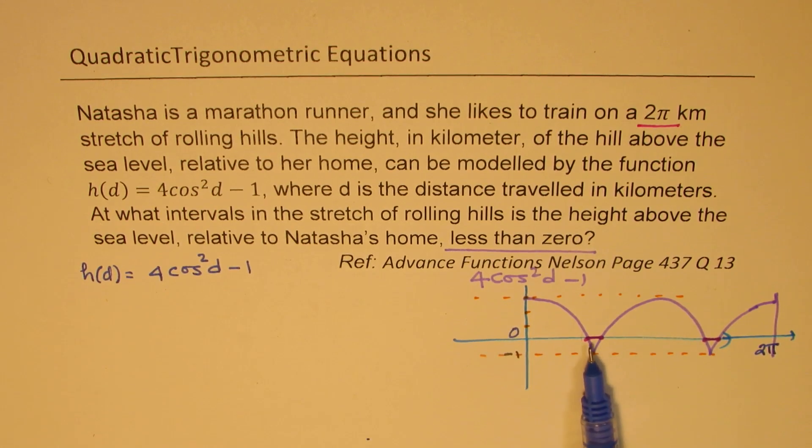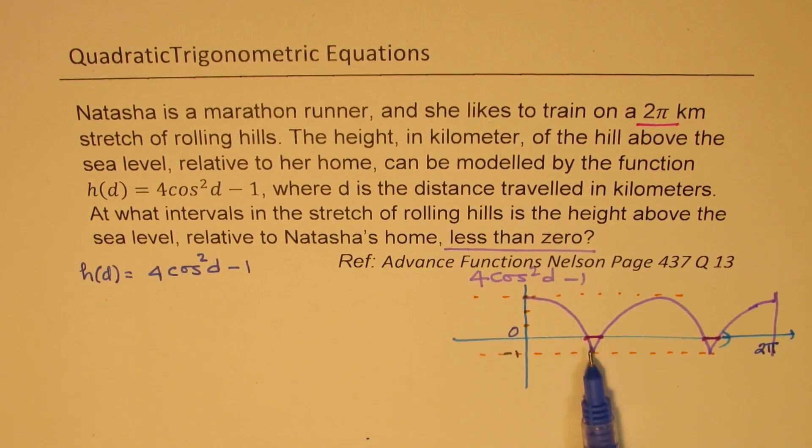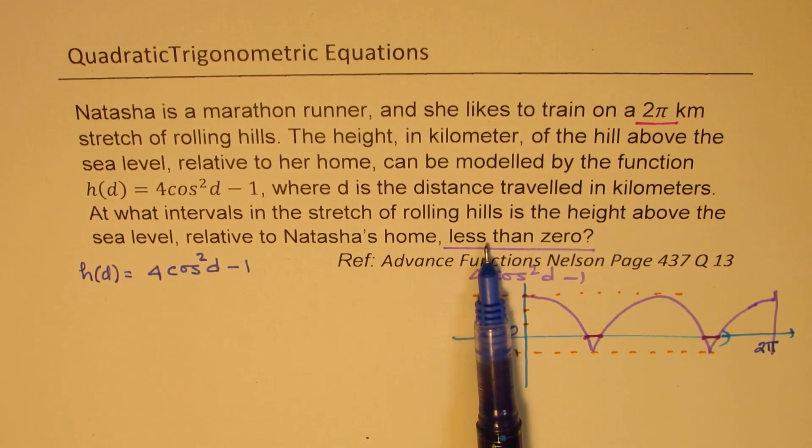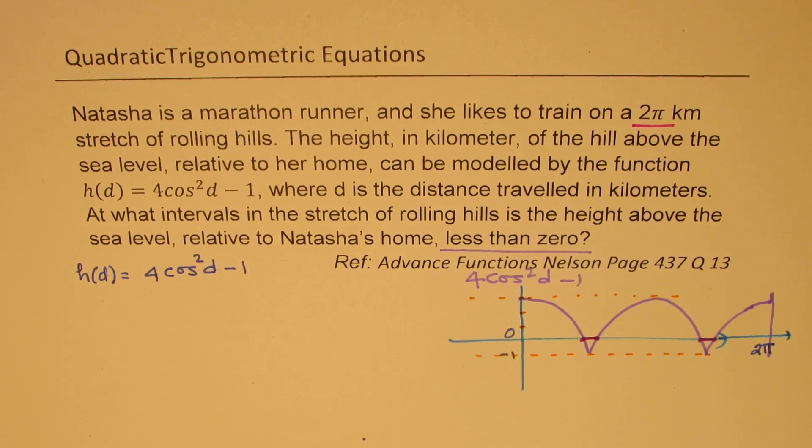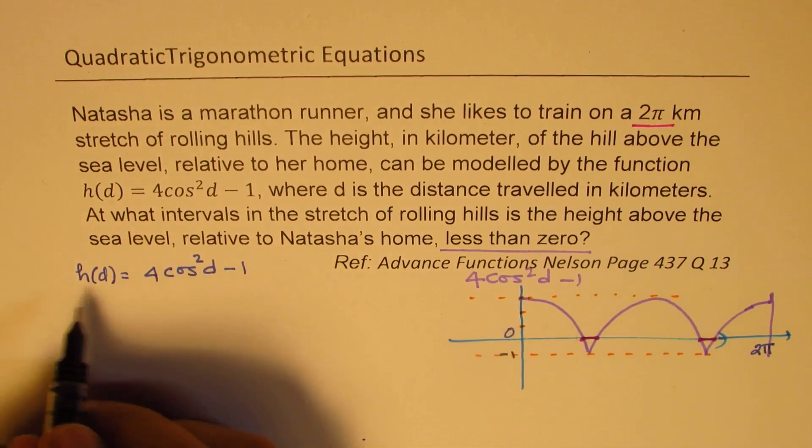So we are looking for these intercepts. Is that clear to you? So this is the duration when it is below 0 relative to sea level. So let us find these 0s first. So find 0s.